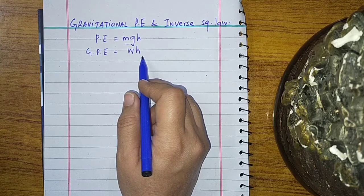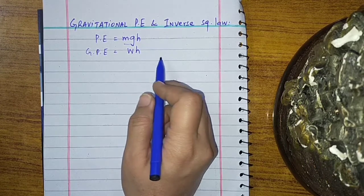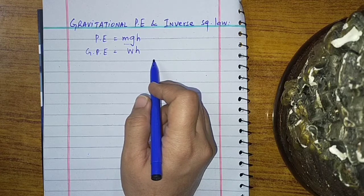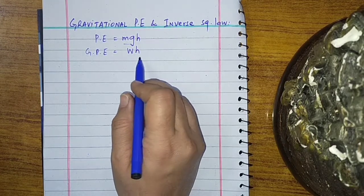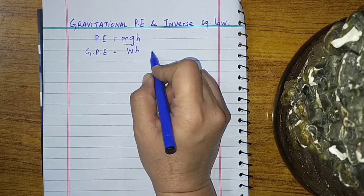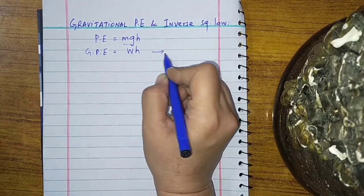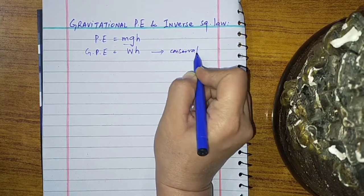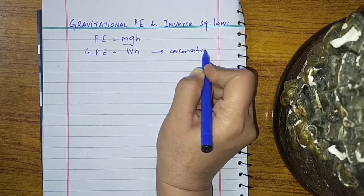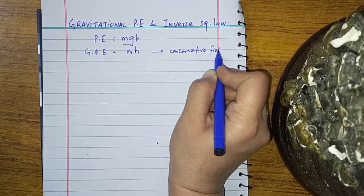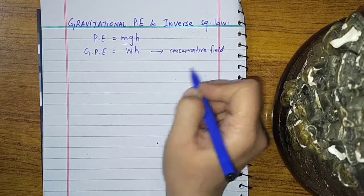Or if the work done in that field along a closed path — a round trip path — is equal to zero, then that field is a conservative field. So this potential energy belongs to the conservative field, which is our gravitational field.